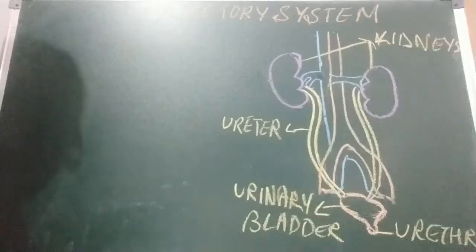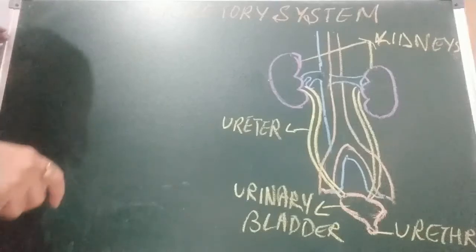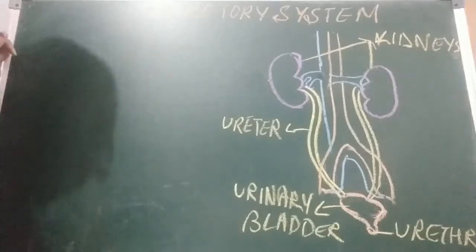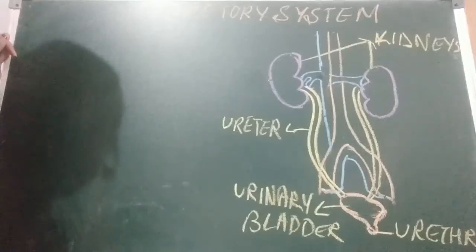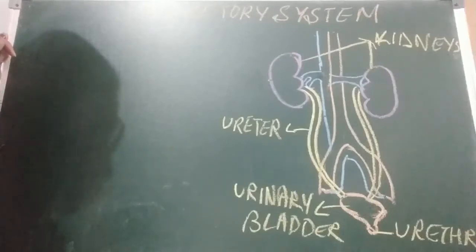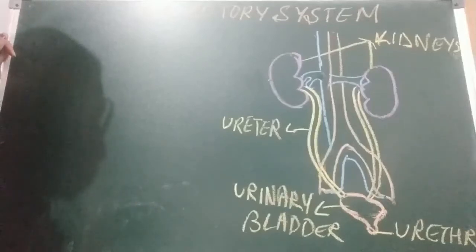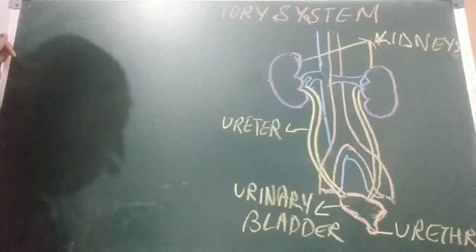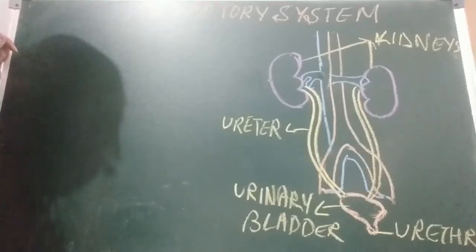Today we are going to discuss excretion in animals. What is excretion? The process of removal of waste products produced in the cells of living organisms is called excretion. Many vital activities take place in the body, and during those reactions, large amounts of waste are produced. We are going to talk about excretion in humans.